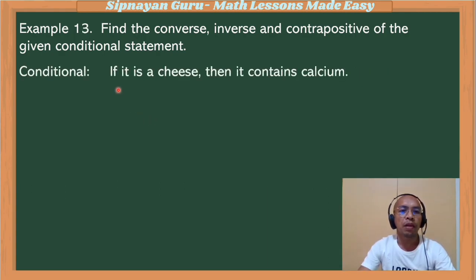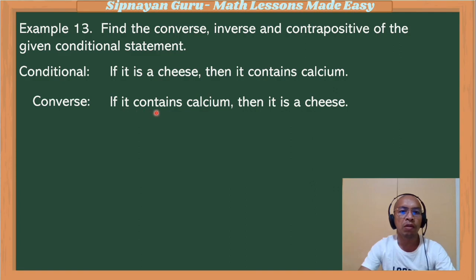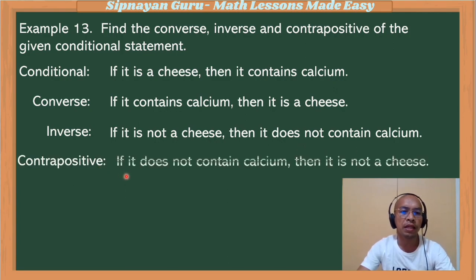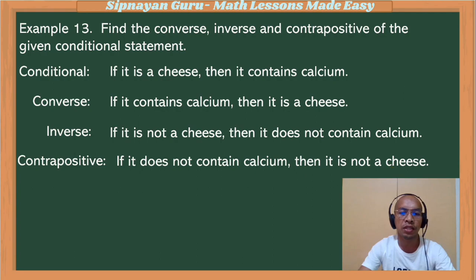Next example: if it is a cheese, then it contains calcium. Its converse: if it contains calcium, then it is a cheese — by switching the hypothesis and conclusion. For the inverse: if it is not a cheese, then it does not contain calcium — we negate both. For the contrapositive: if it does not contain calcium, then it is not a cheese — we switch and negate.